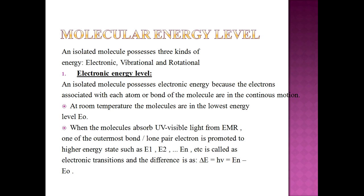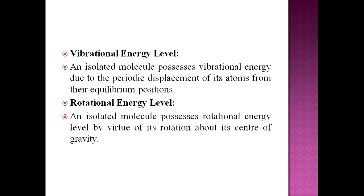Room temperature पर molecules जो होते हैं, वो lowest energy level पे होते हैं, या निके ground state में होते हैं. जब उन पर UV visible fall करती हैं, तो molecules जो हैं, वो ground state से excited state में चले जाते हैं या higher energy state में चले जाते हैं, और इस process को electronic transition कहते हैं.